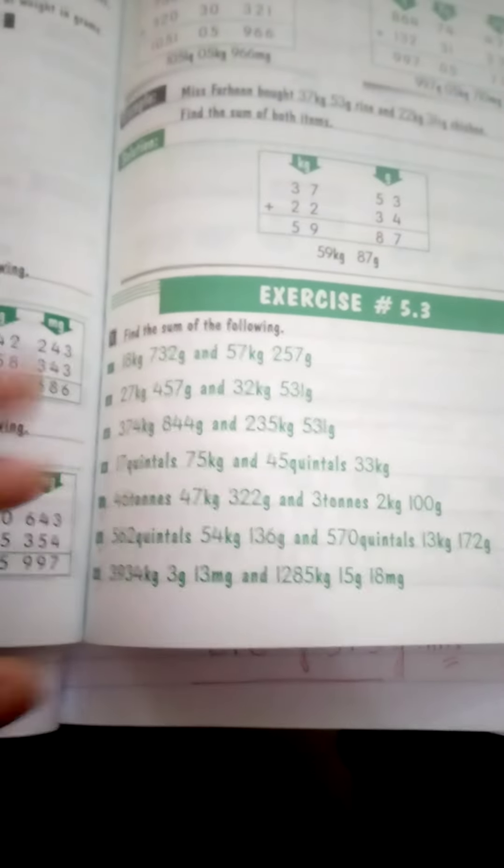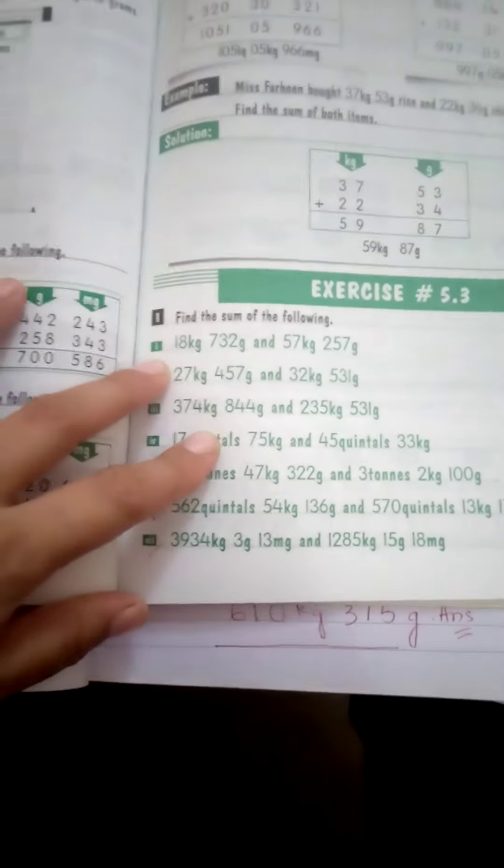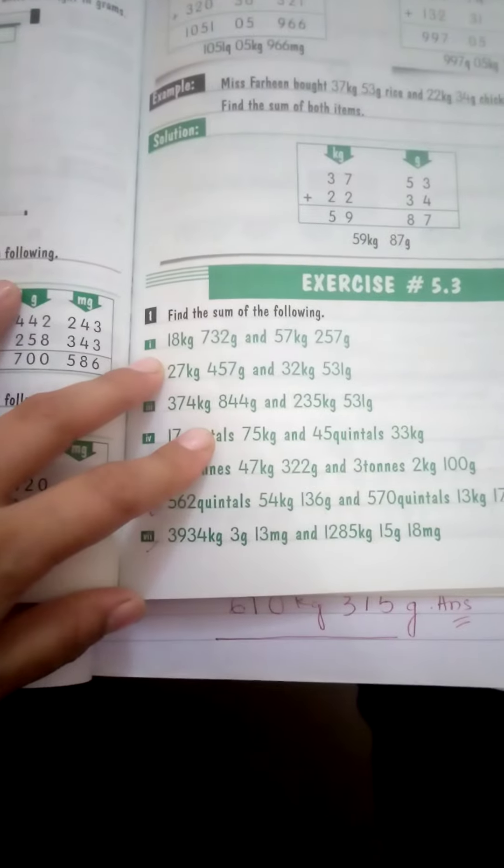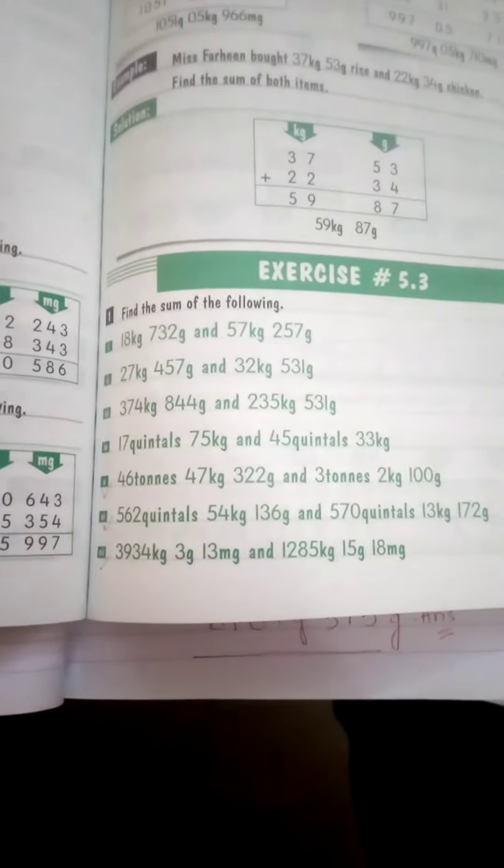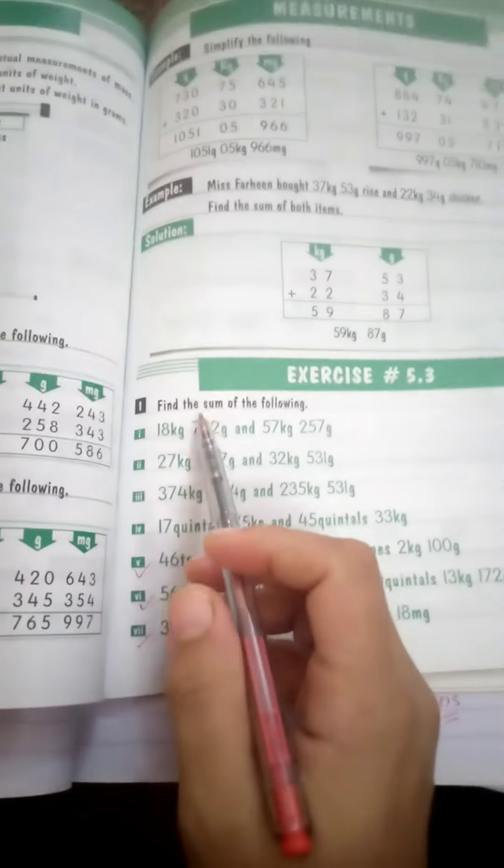Assalamualaikum Grade 4, I hope all of you are fine. Today we are doing Chapter 5 Measurement, Exercise number 5.3. The question is, find the sum of the following. Whenever we see the word sum written, it means we have to add these numbers.